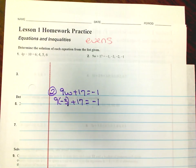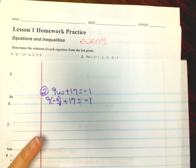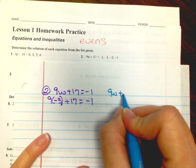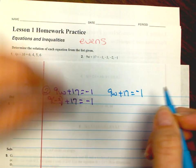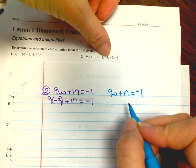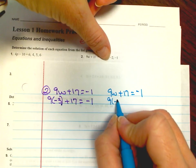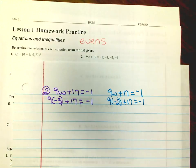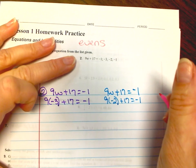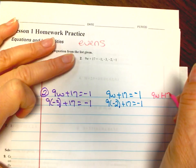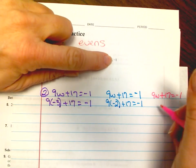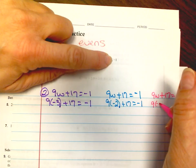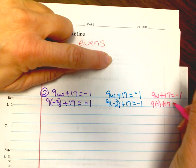Work all the way down until you can prove yes or no. No matter if the first one is it, you still have to prove every single problem. So we're going to take 9w plus 17 equals negative 1 and substitute in negative 2: 9 times negative 2 plus 17 equals negative 1. Solve it out and see if it is yes or no, but show all of your work. Then 9w plus 17 equals negative 1, substituting negative 1: 9 times negative 1 plus 17 equals negative 1.